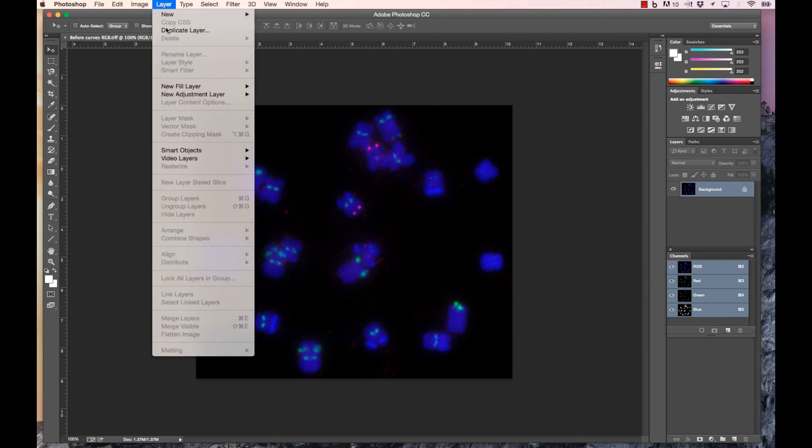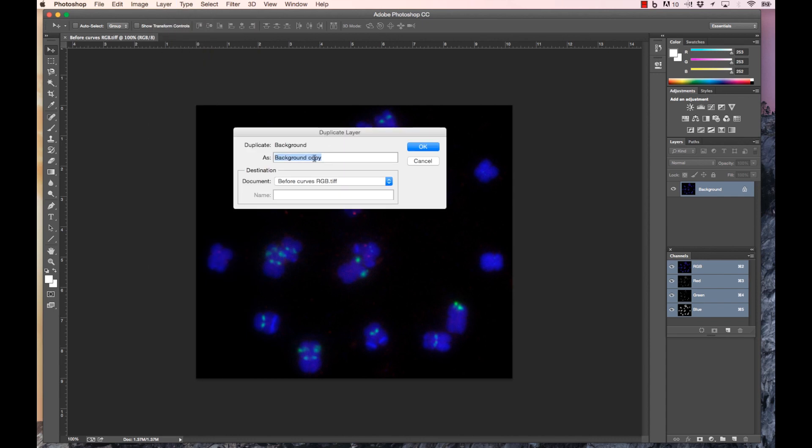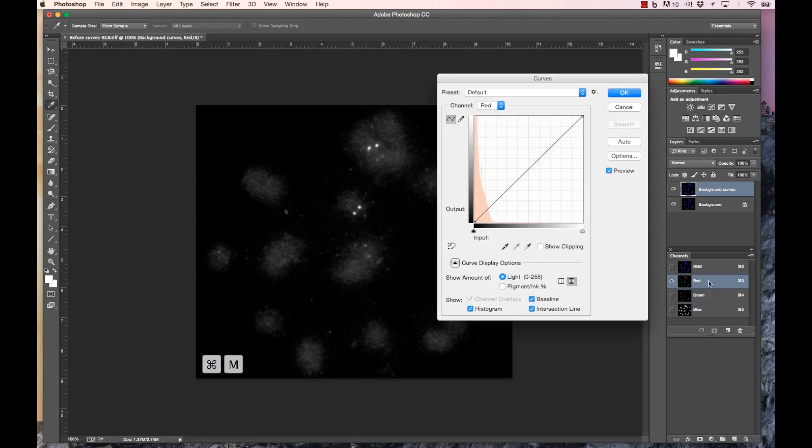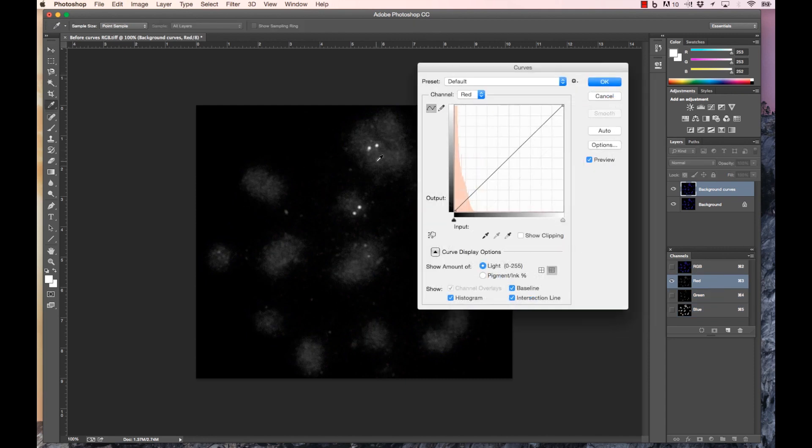To proceed with signal modification, a copy of the image is made by adding a duplicate layer, here renamed as background curves. With the red channel selected, the curves window is opened and the signals of interest are located.